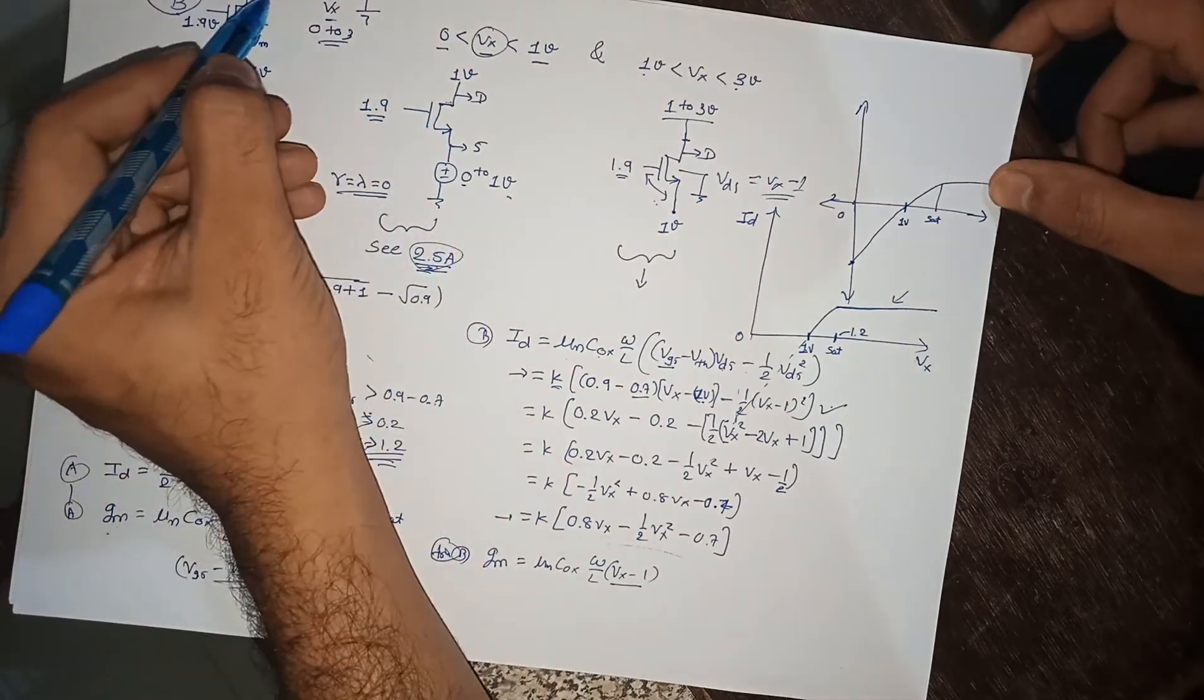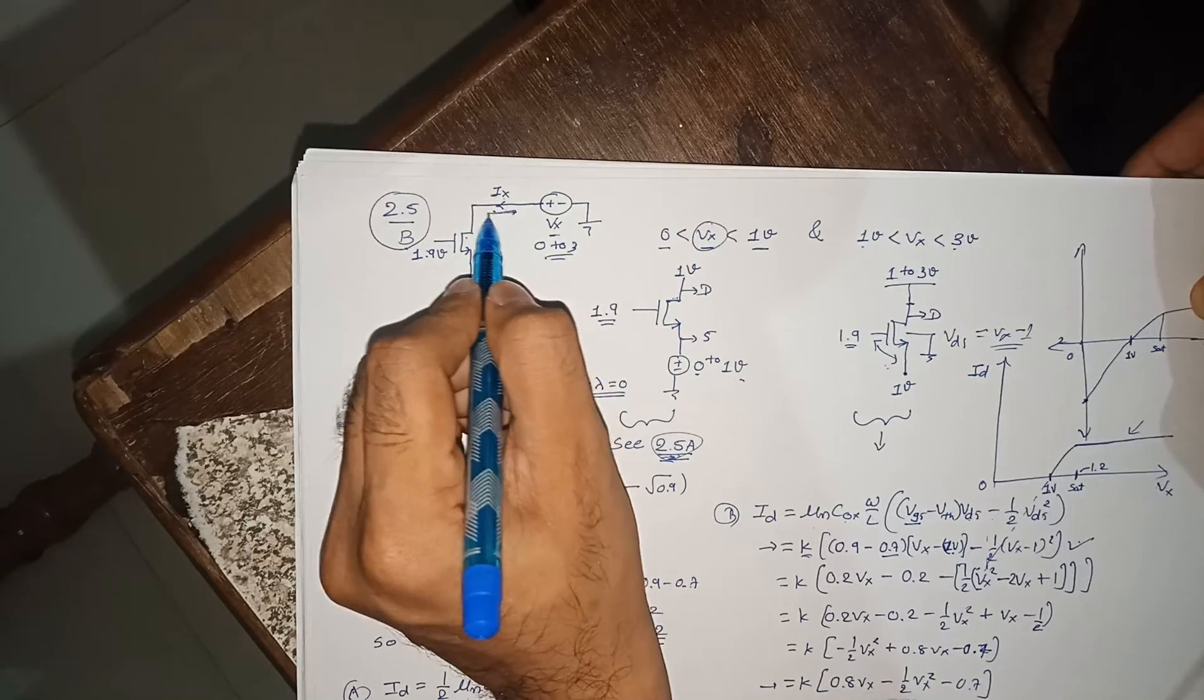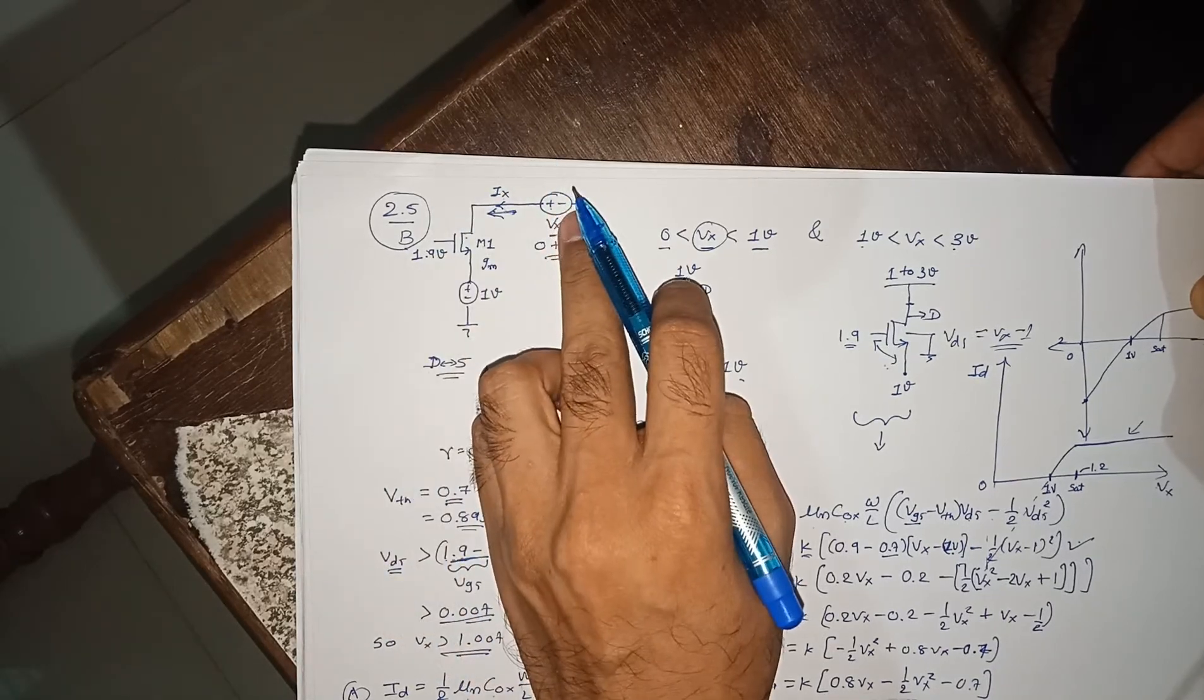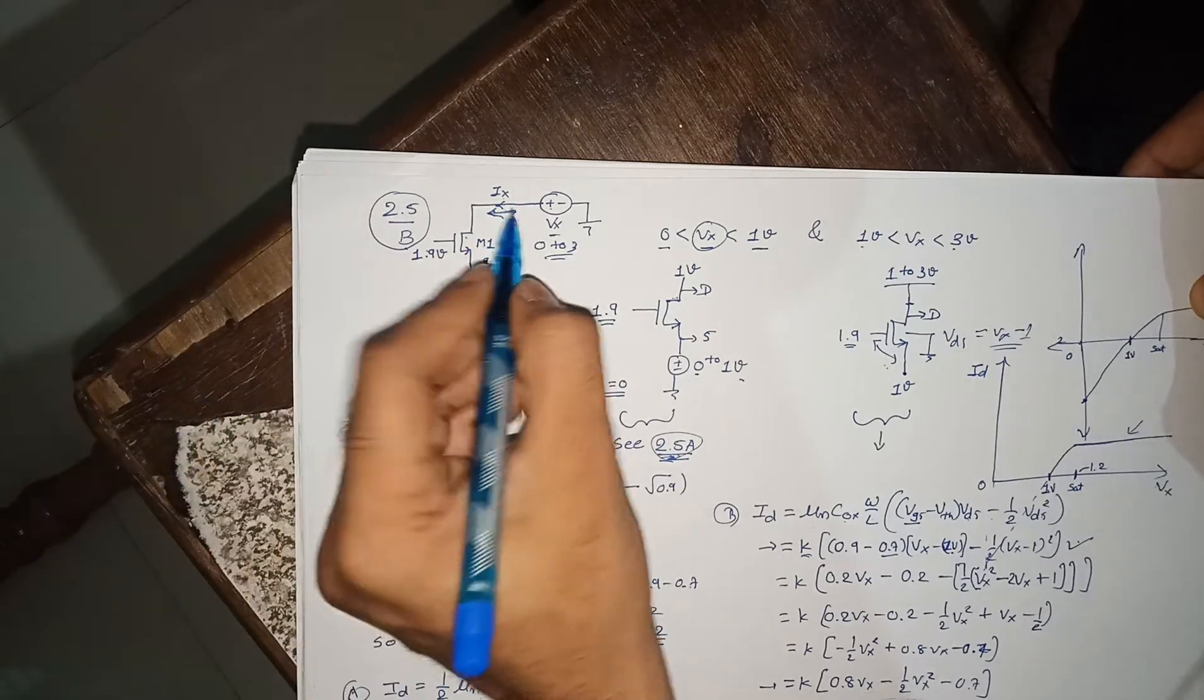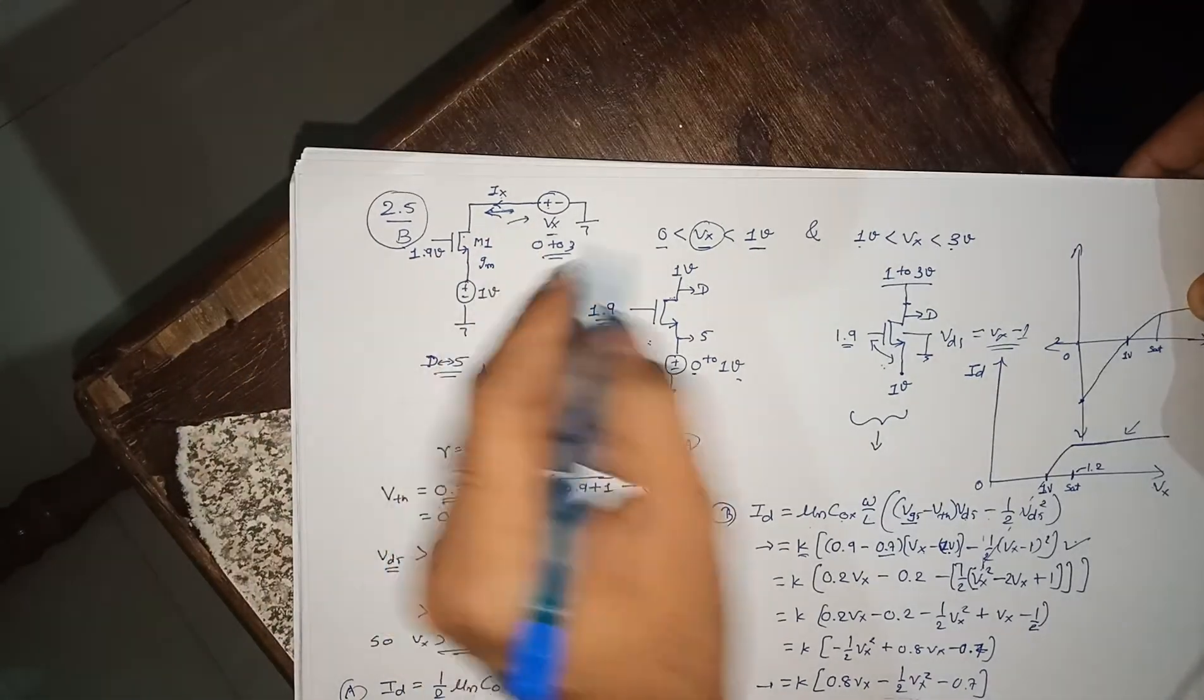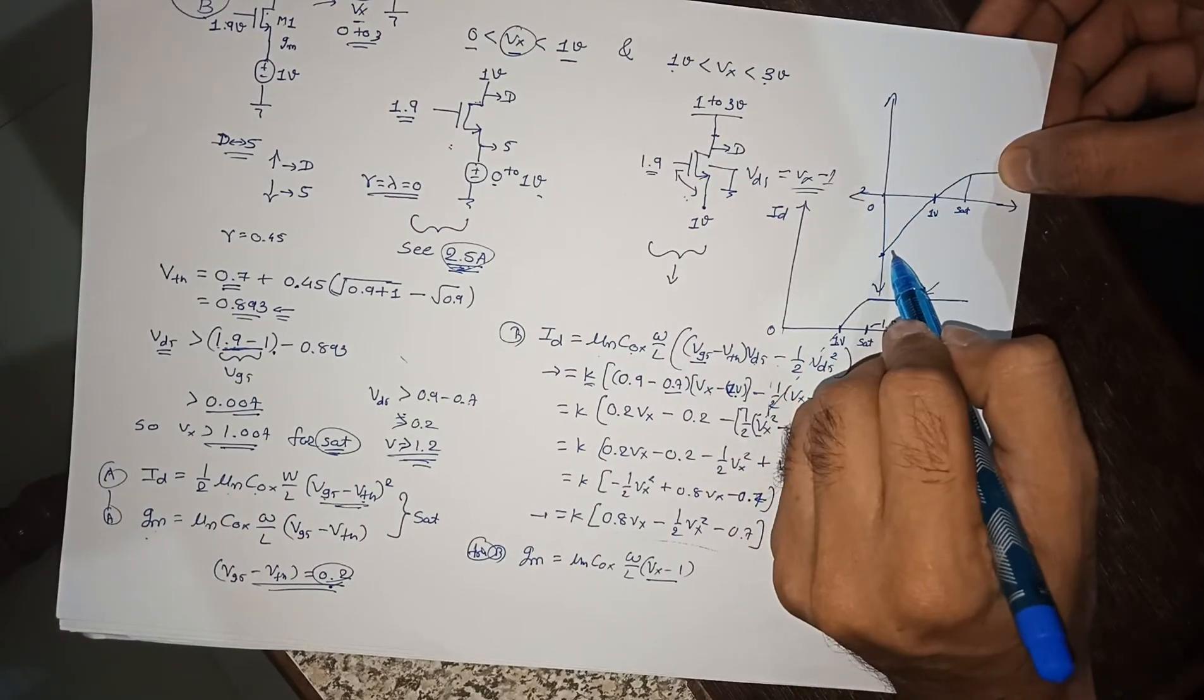Because as we saw, this terminal is changing their role. IX is current coming from this VX, so coming from this VX will be actually going to VX in this condition. That's why this is negative values.